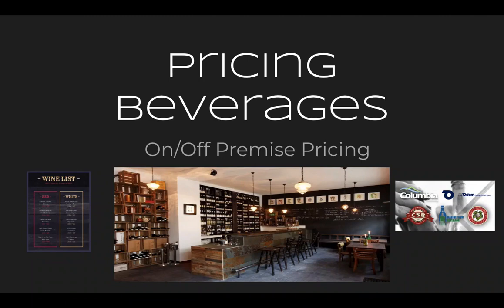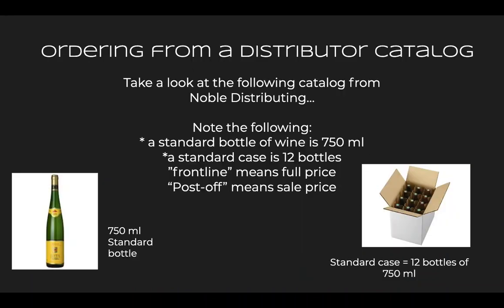Now that we're all on the same page, let's take a look at our first slide. This week we're going to be looking at pricing for both on and off premise. I've linked a catalog for you to look at from Noble Distributing. Whenever we are looking at a distributor catalog, there are just a couple of things I want to make note of so that when you look through it, it'll make sense.